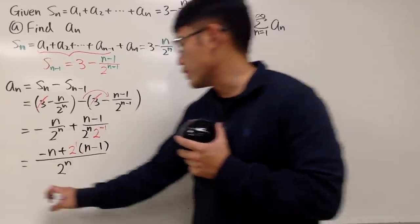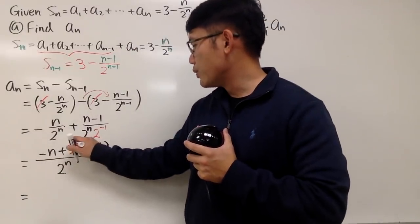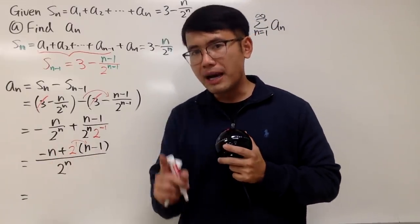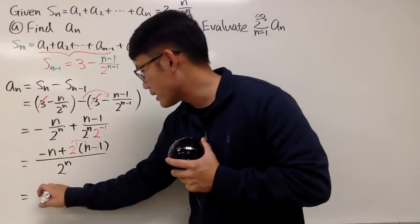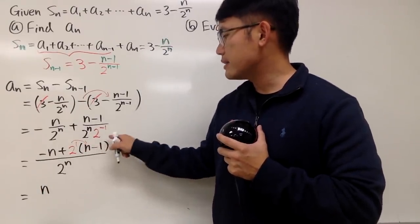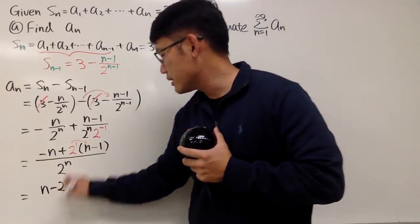And of course, just do this real quick on your own. So you see that $-n$, and when you distribute, you get $-n + 2n$, which is positive $n$, right? So we have positive $n$ here. And we have $2 - 2 \times -1$, which is minus 2, like that.